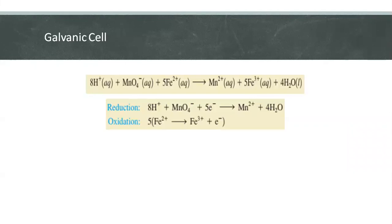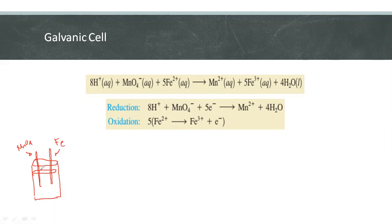When permanganate and iron are present in the same solution, let's say this is our container. If both permanganate and iron are present in the same solution, the electrons are transferred directly.